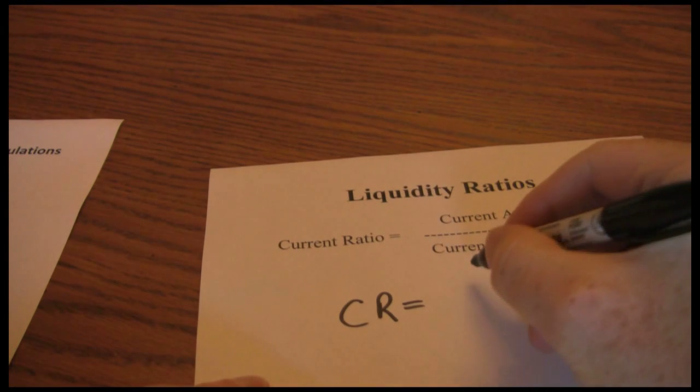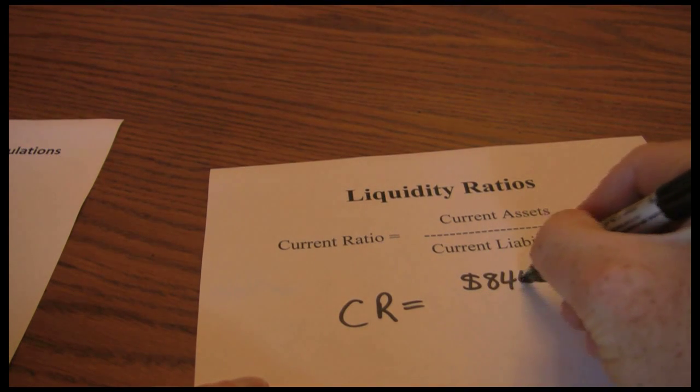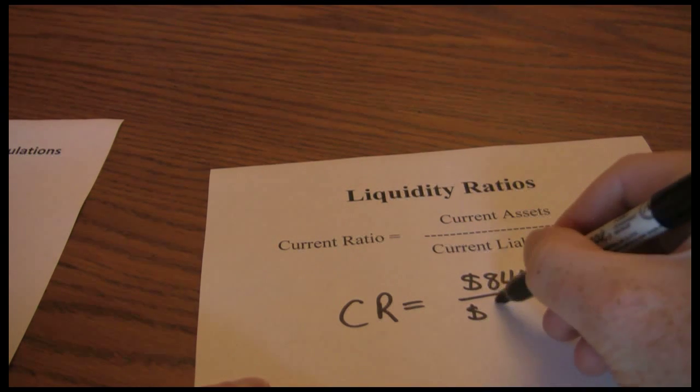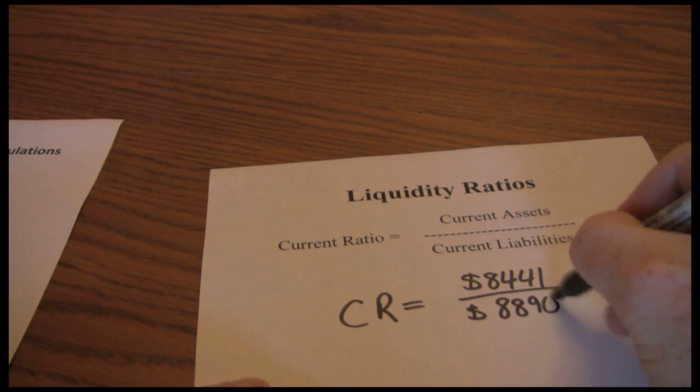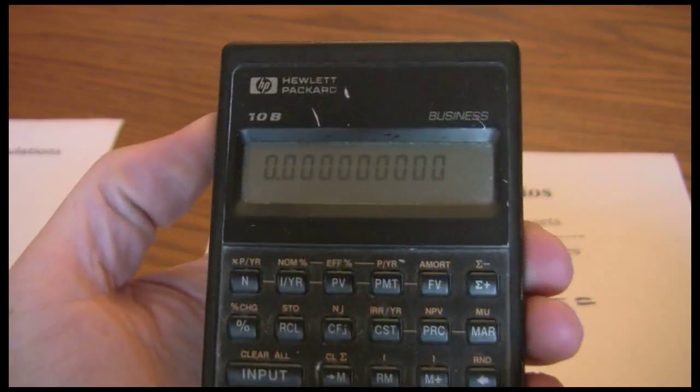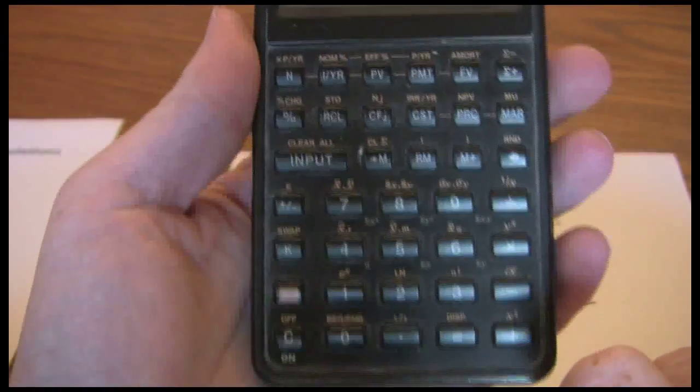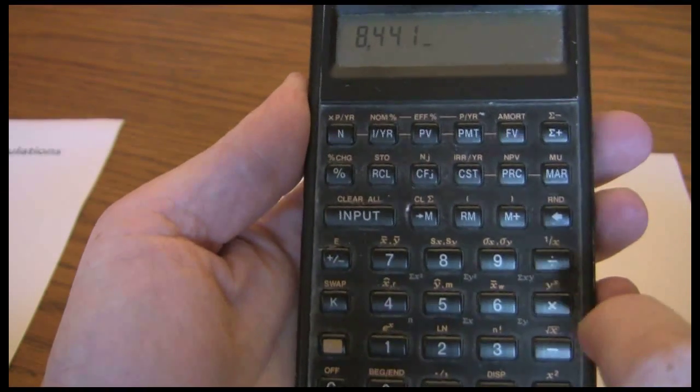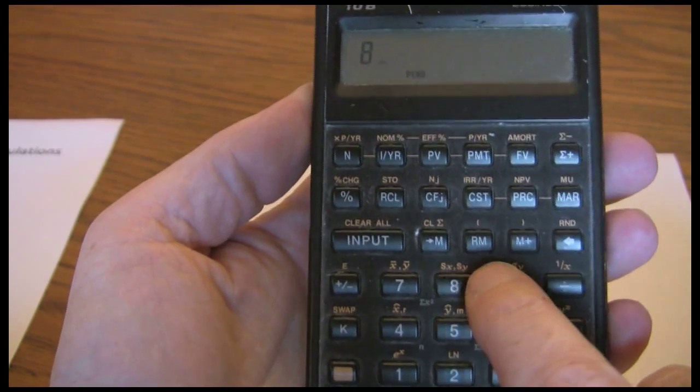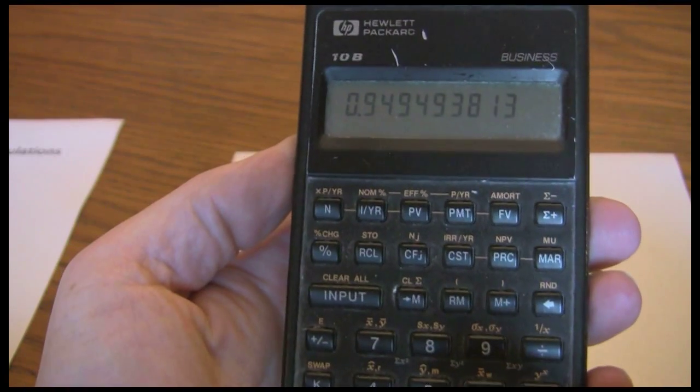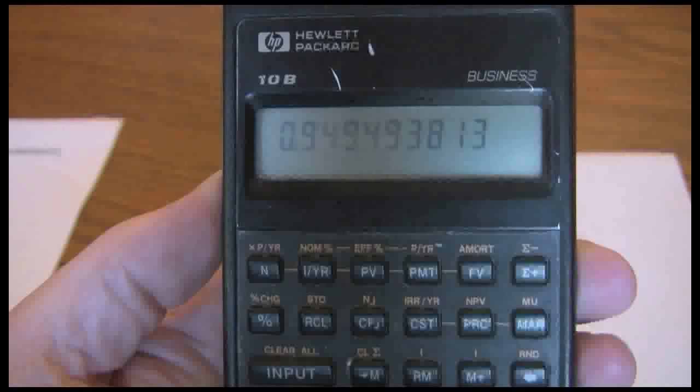Current ratio is the $8,441 from our current assets divided by the $8,890 from our current liabilities. You don't need a financial calculator for this, any calculator will do. We have $8,441 divided by $8,890, which gives us a current ratio of 0.95.